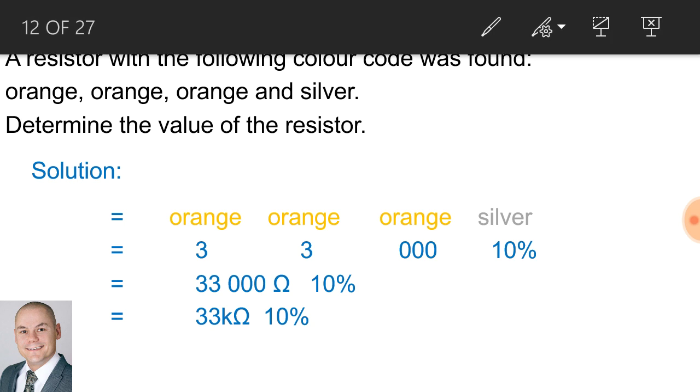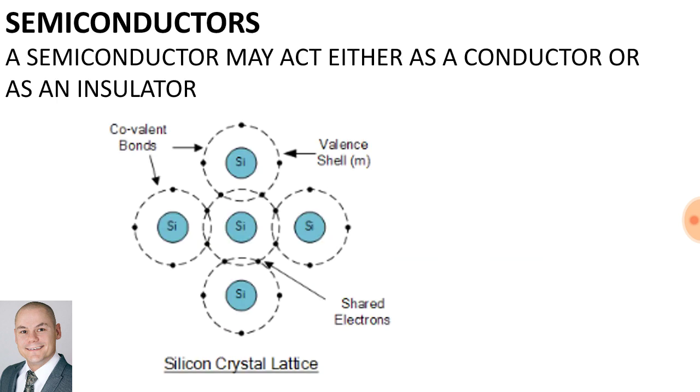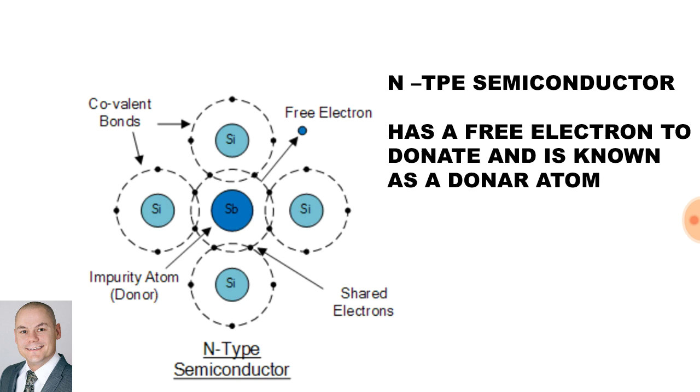Let's have a look at some definitions of electronic components. What is a semiconductor? A semiconductor may act either as a conductor or as an insulator. We get p-type and n-type semiconductors.